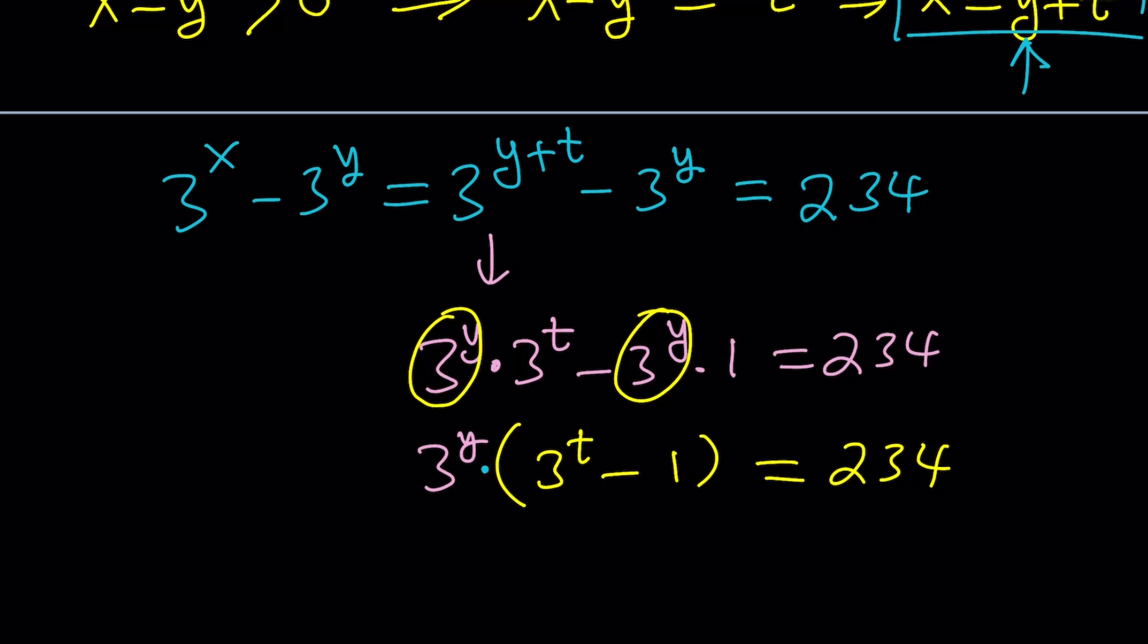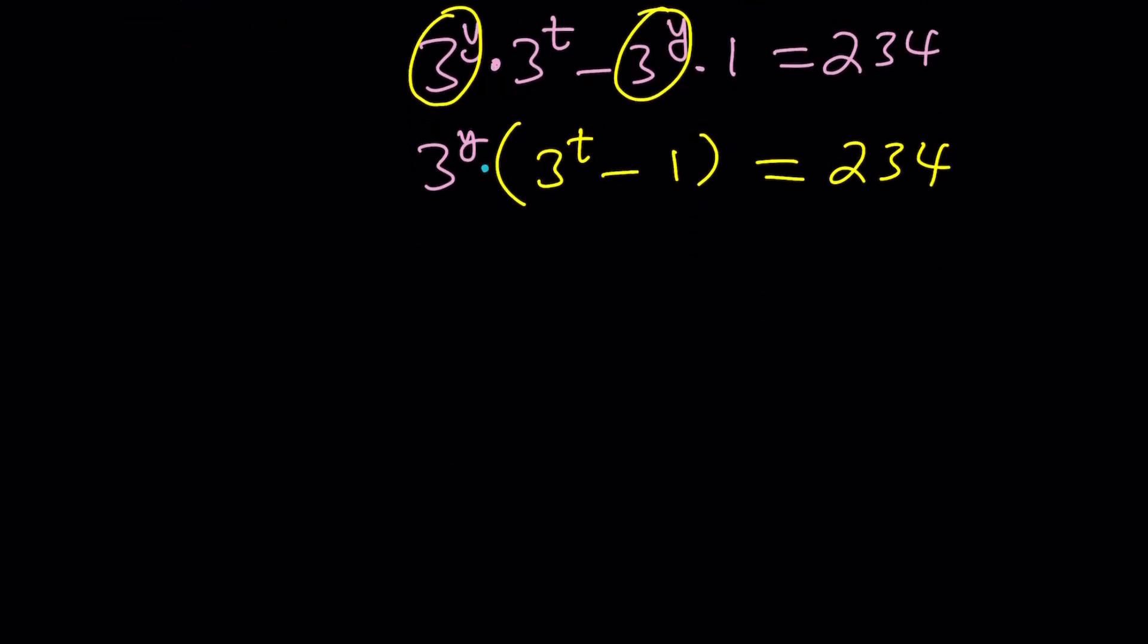Now, y and t are integers. So, 3 to the y and 3 to the t minus 1 are integers. And their product is 234. What is that supposed to mean? Does that look like number theory? Obviously, Diophantine equations fall under number theory. Which means that we're going to be able to factor 234.